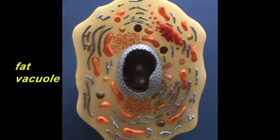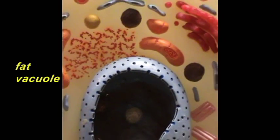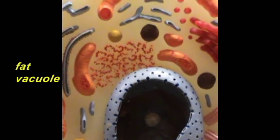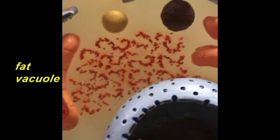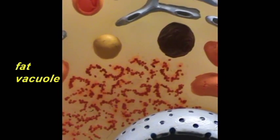If we zoom in on one of these, you can see they're just very dark spherical structures. Fairly nondescript in appearance, nothing really distinctive about them. And notice also that they are larger than the lysosomes.